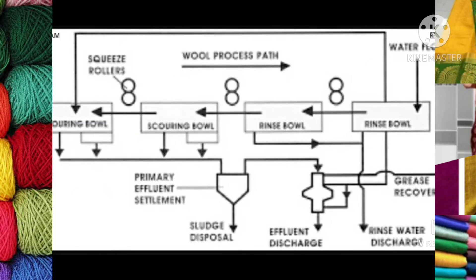This is the process where scouring is done — a process bath, rinse, water. Scouring means cleaning the wool by washing out dirt, oily structure, and dust from the raw wool. With the help of water flow it is rinsed, then scouring is done. The rolls are squeezed, then taken for sludge disposal. The unwanted particles and effluent are discharged, removing all greasy, dusty, and dirty particles from the raw wool.